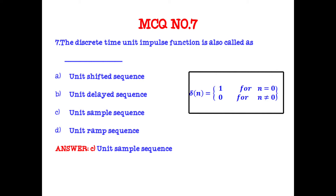The continuous time unit impulse function is also called the Dirac delta function. The continuous time unit impulse function δ(t) is called the Dirac delta function, which plays an important role in signal analysis.